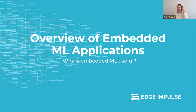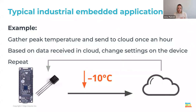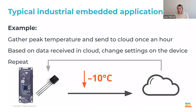Before we get started, what actually is Embedded ML and why is it useful? Let's look at a current IoT embedded application example — an industrial application taking peak temperature data once an hour, sending it to the cloud, and analyzing it. We're gathering peak temperature, sending it to the cloud, and then based on that data, changing the settings on the device — all from a temperature sensor on a Sony Spresense, for example.